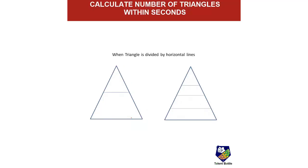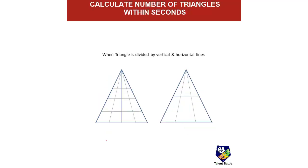When a triangle is divided by horizontal lines, just count the number of horizontal lines. With 1 and 2 horizontal lines, total triangles are 2. In another figure with 1, 2, 3, 4 horizontal lines, total triangles are 4.